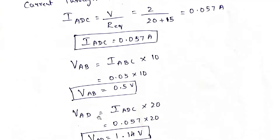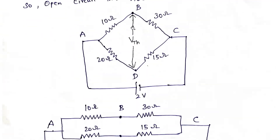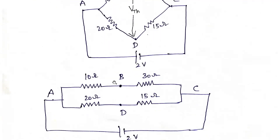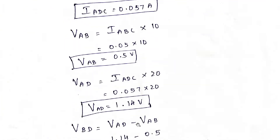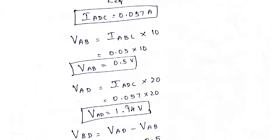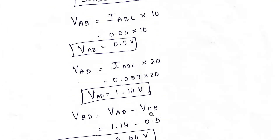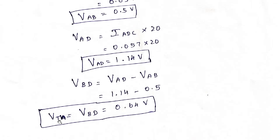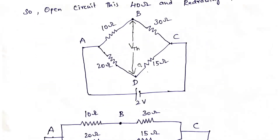Now we need to find out what is VBD, because across this point we need to find out VBD — that is the voltage between B and D, which is nothing but VTH. VBD is calculated as VAD minus VAB, because that potential is more. So VBD equals VAD minus VAB: 1.14 volts minus 0.5 volts equals 0.64 volts. That is nothing but VTH.